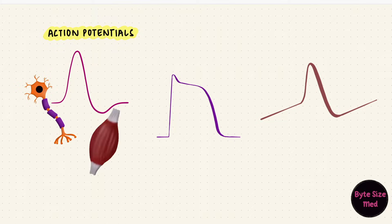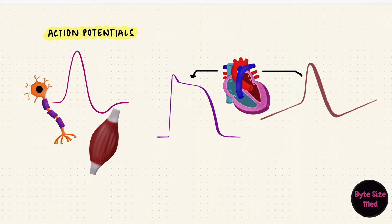Action potentials are how excitable cells like nerve and muscle cells communicate. The action potentials of nerves and skeletal muscles look similar, but in cardiac muscles they've got different phases and there are two kinds.